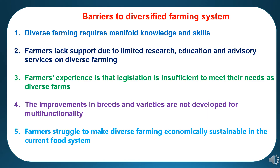Now, the barriers to diversified farming system. The first barrier is that diverse farming requires manifold knowledge and skills. Several farmers articulated the complexity involved in using several species, varieties, animals or activities on the farm because it means the farmer has several jobs all at the same time.